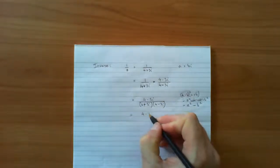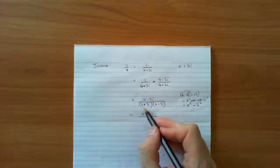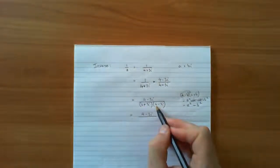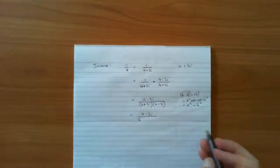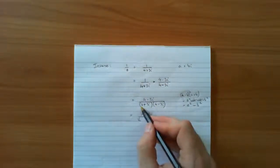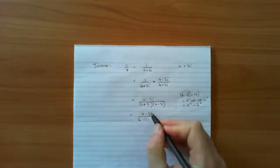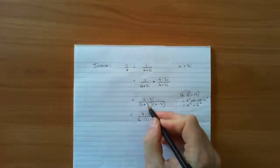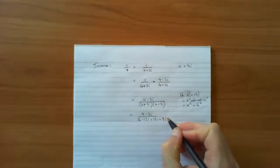And the bottom, we could expand it out the long way. 4 times 4 is 16. In fact, I might as well do that, and you'll see how we could shortcut in future. 4 times 4 is 16, 4 times negative 3 is negative 12i, 3i times 4 is plus 12i, and 3i times negative 3i is negative 9i squared.